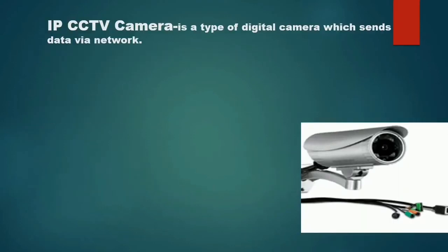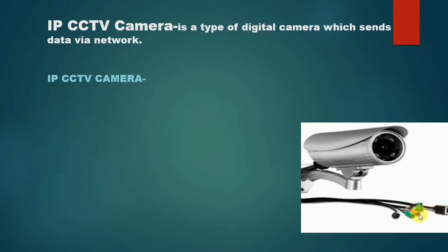We also have the IP camera. An IP camera is simply a digital camera that sends data via the network. This kind of camera is mostly used in offices, but you can also use it in your home. For example, if you want to monitor your kids from your office or from wherever you are, you can install IP cameras in your house and connect them to the internet to view the feeds from anywhere.